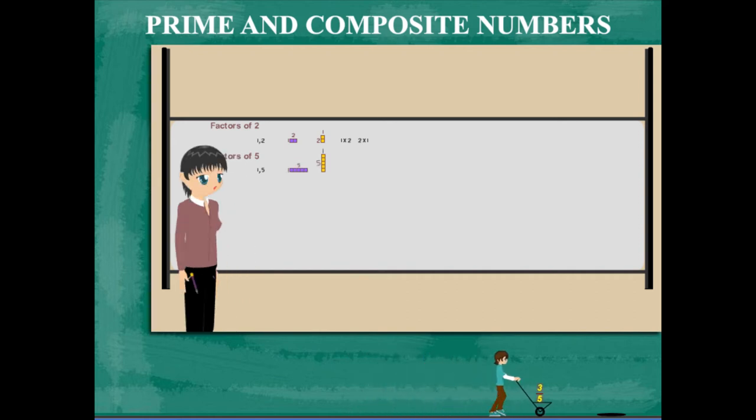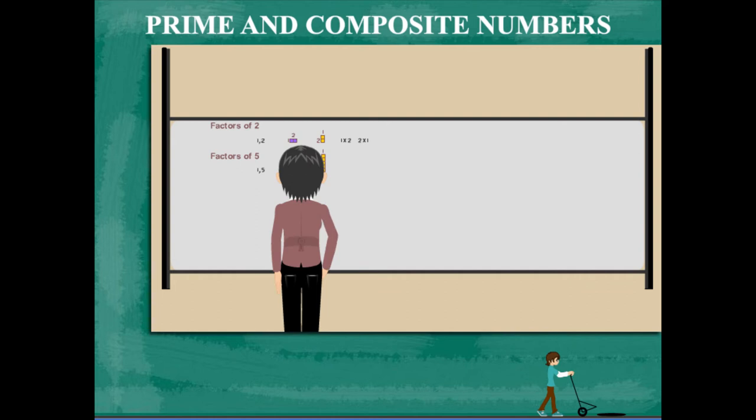The factors of 5 are 5 and 1. This is also a prime number.